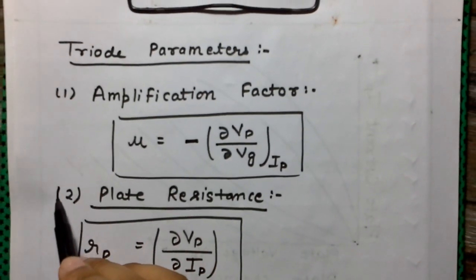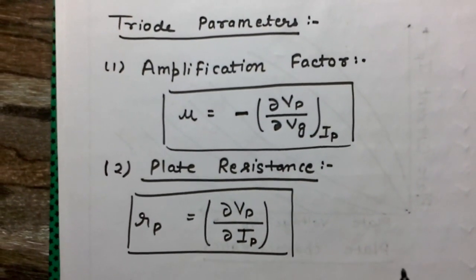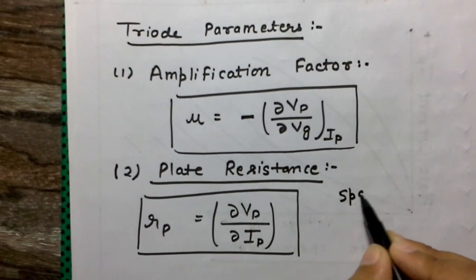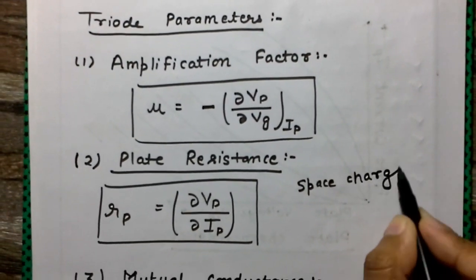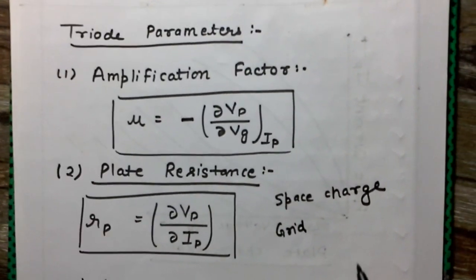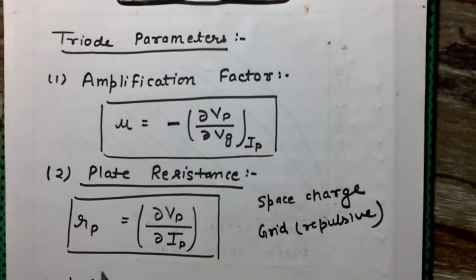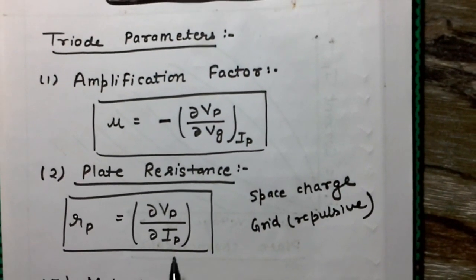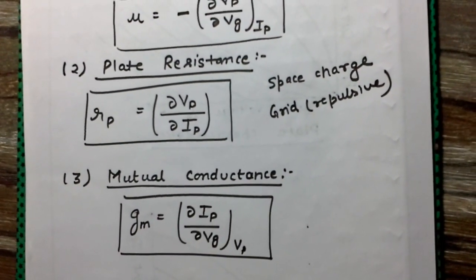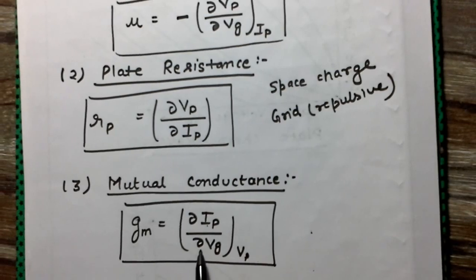The second triode parameter is the plate resistance. The vacuum tube offers resistance, which may be due to the space charge formed by electrons and also due to the grid given a negative voltage that offers a repulsive force to electrons. Plate resistance is given by the change in plate voltage divided by the change in plate current. The third parameter is mutual conductance, which shows how effective the grid voltage is in controlling the plate current, and is given by the change in plate current divided by the change in grid voltage.